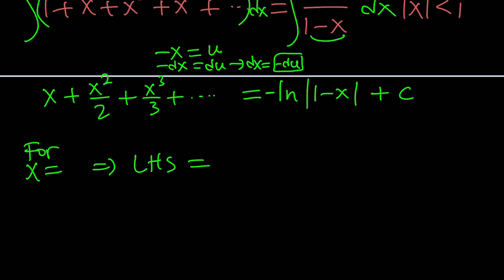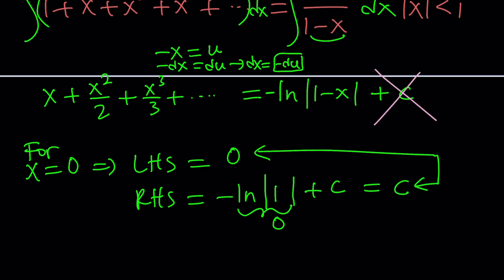For x equals 0, the left-hand side would be 0 because everything would be 0, right? And then the right-hand side would be negative ln absolute value of 1 minus 0, which is ln 1 plus c. But ln 1 is 0, so this would be c. And since left-hand side equals the right-hand side, c would be 0, which means we don't need c. Okay? Why did we write it though? You never know. We might need it or it might be something different from 0, right? Great.